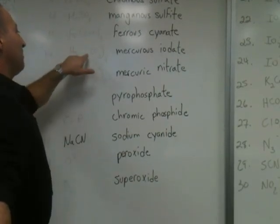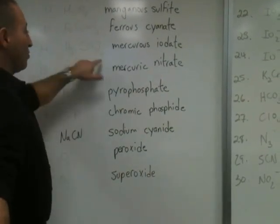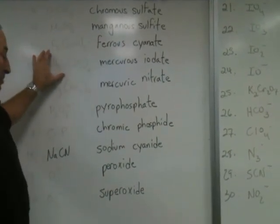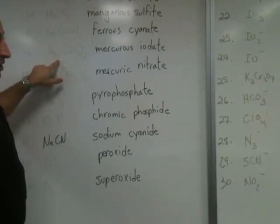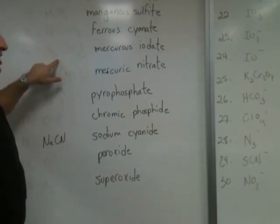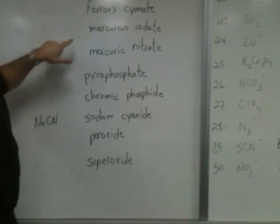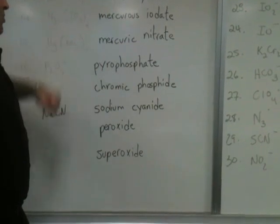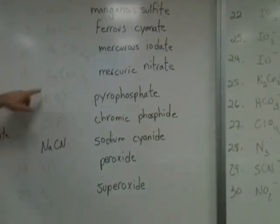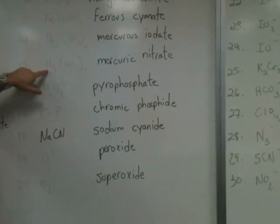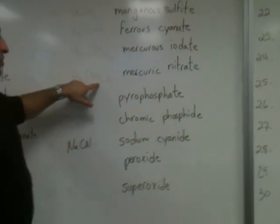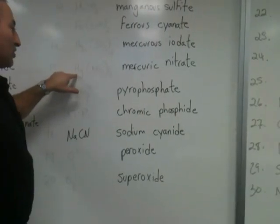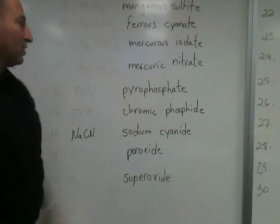Mercurous iodate — how do we get that? Iodate is minus one; there are two iodate anions, therefore the total charge is minus two, which has to be counterbalanced by the plus two of the mercury. But there are two mercury atoms providing that plus two charge, which means each mercury atom is carrying a plus one charge, so we call it mercurous. Mercurous is the lower charge mercury cation. This is the higher charge mercury, so it's mercuric, because it's combined with two nitrates which are minus one, but there's only one mercury atom providing the plus two charge. Mercuric nitrate is what we call it.